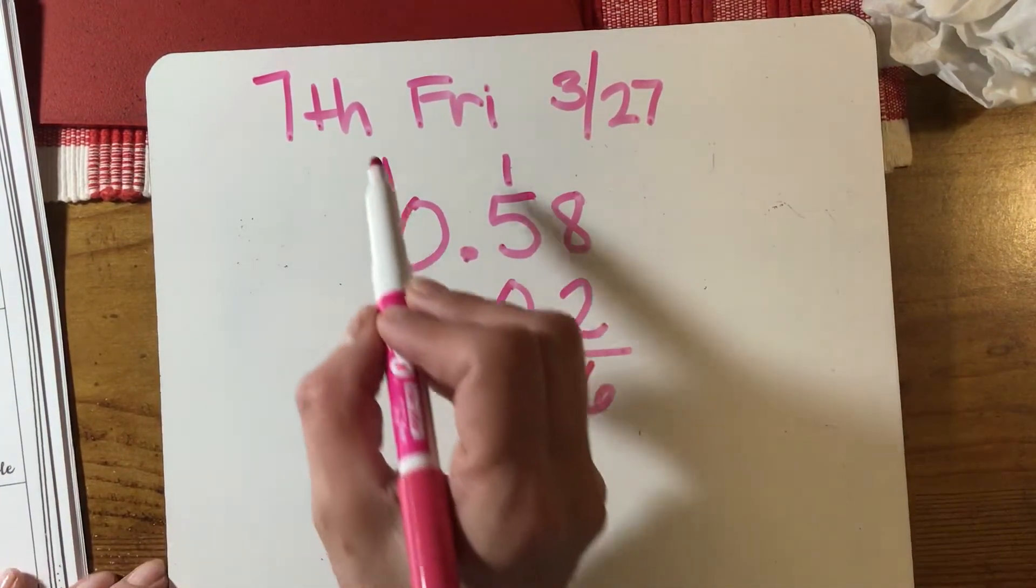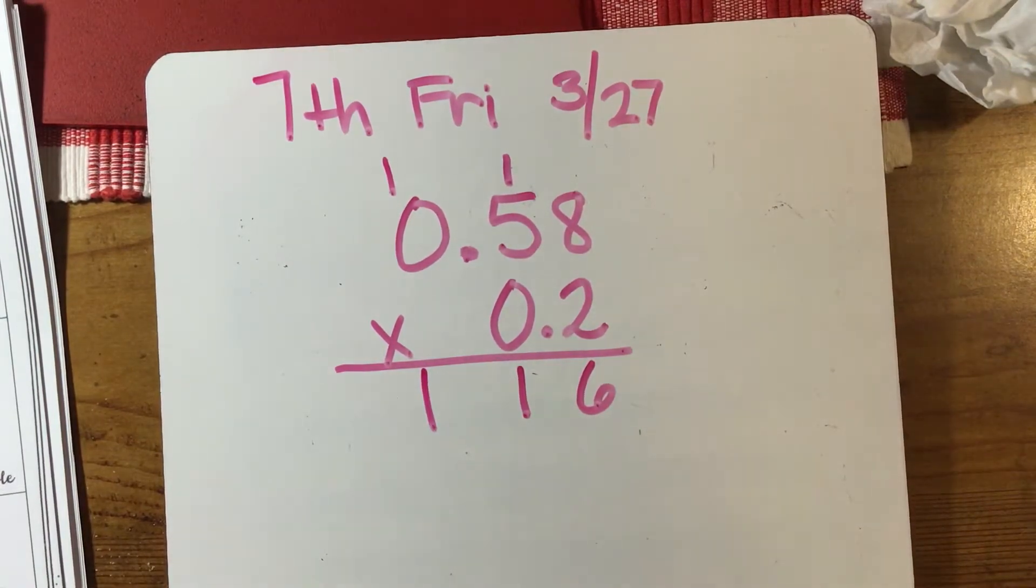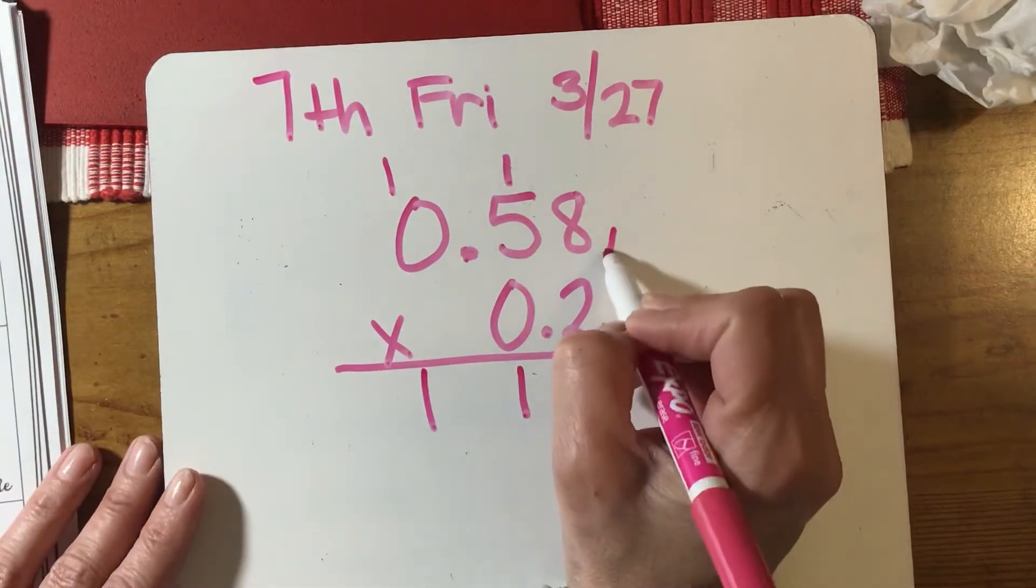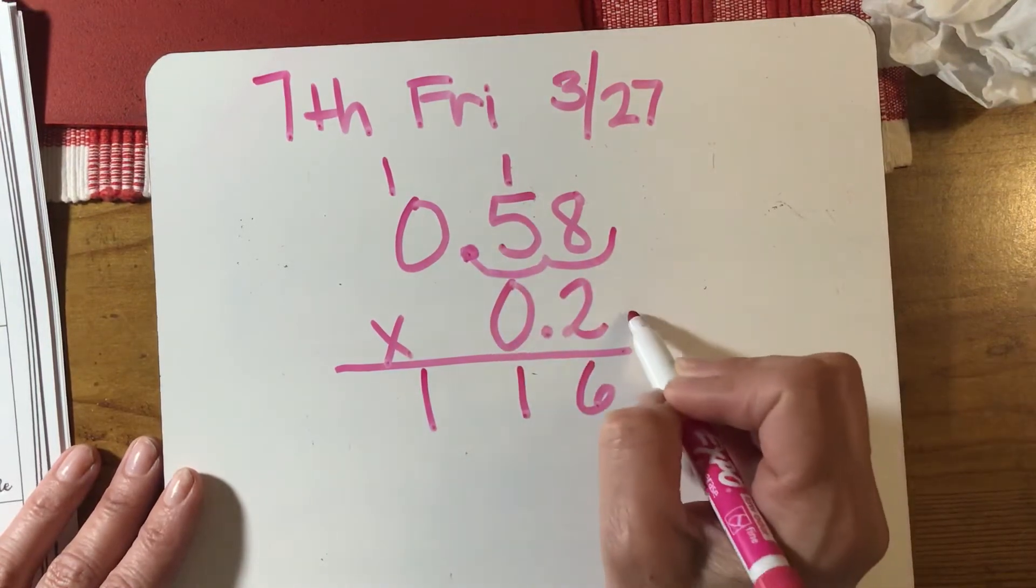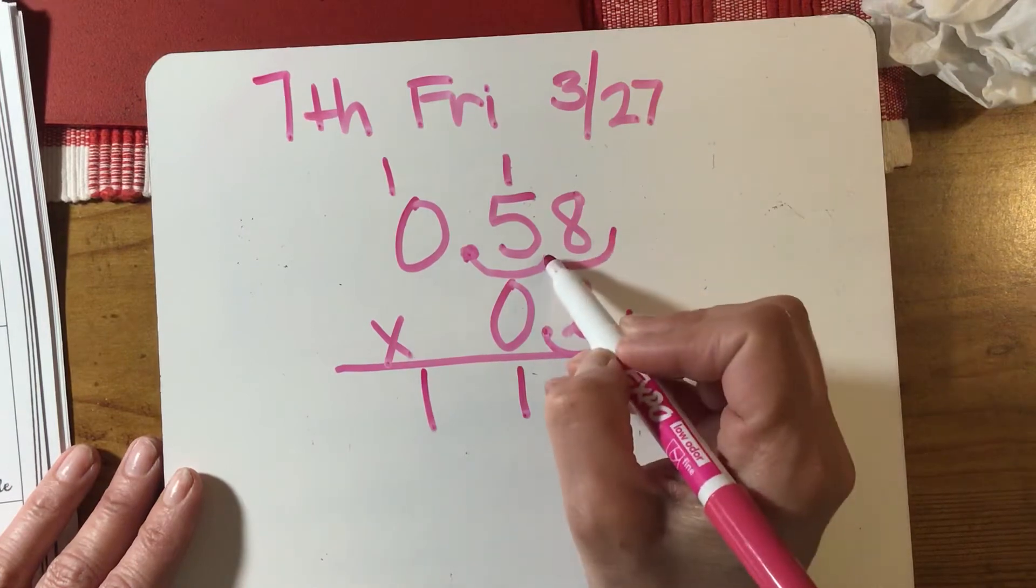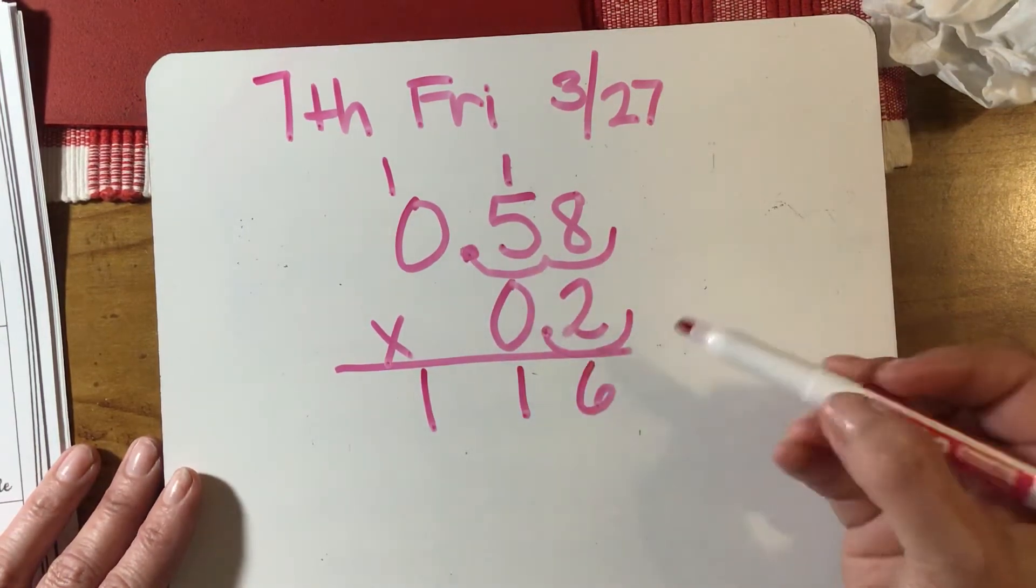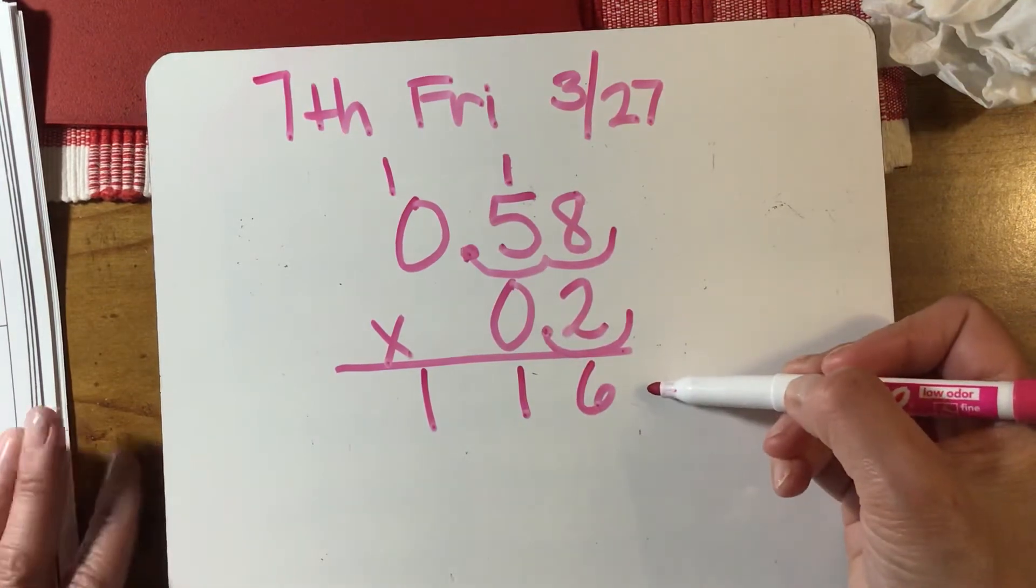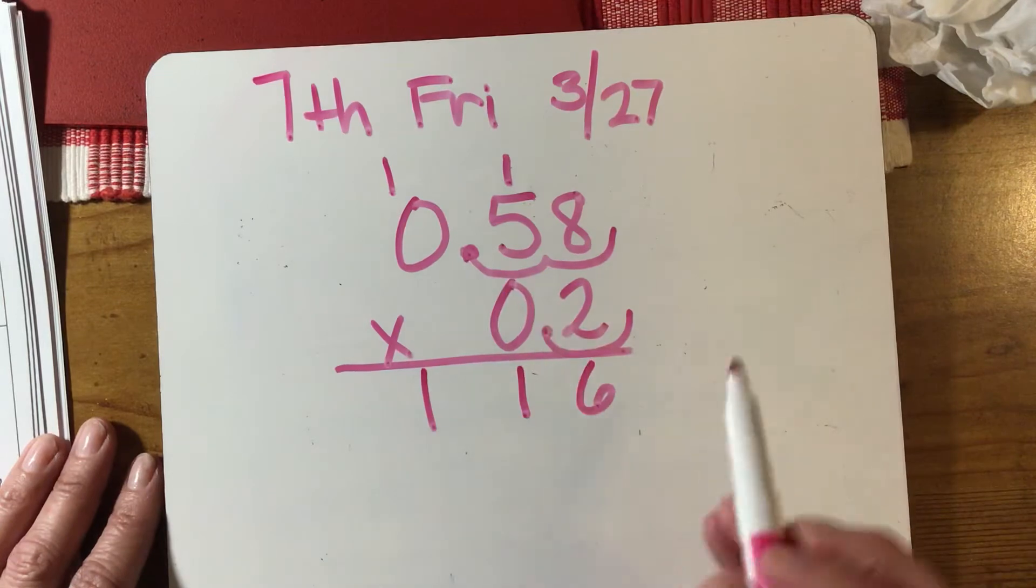Two times zero is zero, plus one is one. Now you have to figure out what to do with the decimal. Hopefully you remember this from last week: you need to count how many place values your decimal is from the right to the left. So I have one, two, three.